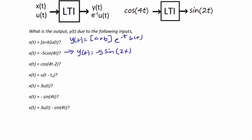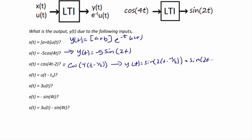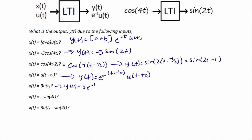If the input was x(t) = cos(4t - 2), we can rewrite this as cos(4(t - 1/2)), which represents a time shift of 1/2. So the output would be y(t) = sin(2(t - 1/2)) = sin(2t - 1). What if the input was x(t) = u(t - t_0)? This is also a time shift by t_0, so the output y(t) = e^(-(t - t_0)) u(t - t_0). If the input was x(t) = 3u(t), then the output would be y(t) = 3e^(-t)u(t).